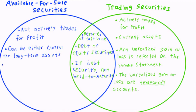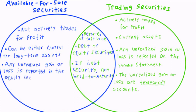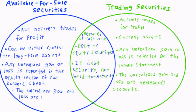For available-for-sale securities, any unrealized gain or loss is reported in the equity section of the balance sheet. So the gain or loss is reported, but does not affect the company's net income. Since the unrealized gain or loss is reported on the balance sheet for available-for-sale securities, the account is a permanent account whose balance will carry forward every period.